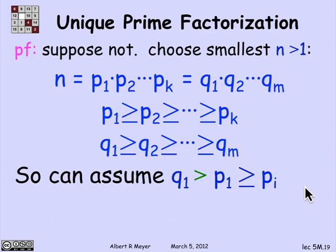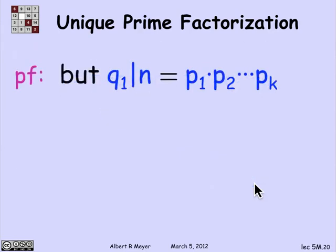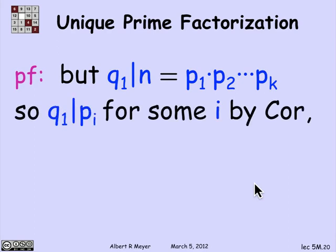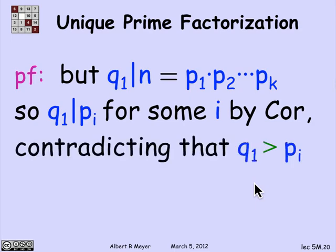So one of them must be greater. We may as well assume q1 is bigger than p1. Since p1 is greater than or equal to all the other p's, q1 is in fact bigger than every one of the p's. Now q1 divides n, and n is the product of the p's. By the corollary, since q1 divides a product of primes, it must divide one of them — q1 must divide pi for some i. But that contradicts the fact that q1 is bigger than pi: a larger number cannot divide a smaller one. We have proved the unique factorization theorem.